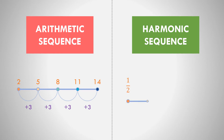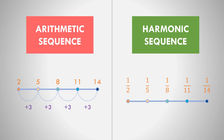How do we get the harmonic sequence? That is the reciprocal of the arithmetic sequence. So the reciprocal of 2 is 1/2, the reciprocal of 5 is 1/5, the reciprocal of 8 is 1/8, the reciprocal of 11 is 1/11, and the reciprocal of 14 is 1/14.